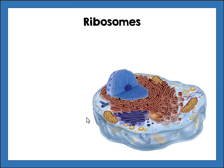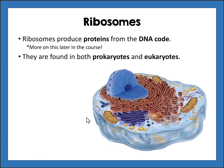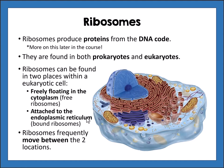Ribosomes produce proteins from the DNA code. They are found in both prokaryotic and eukaryotic cells. Within eukaryotic cells, ribosomes can be freely floating in the cytoplasm or attached to the endoplasmic reticulum — those are called bound ribosomes. Ribosomes frequently move between the two locations, sometimes freely floating and sometimes bound.